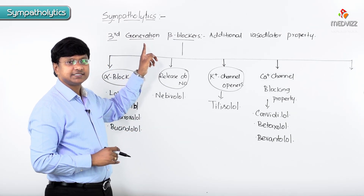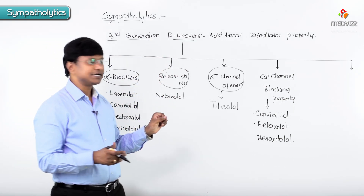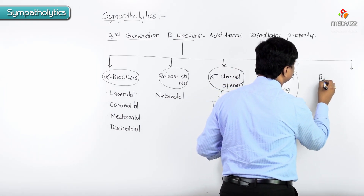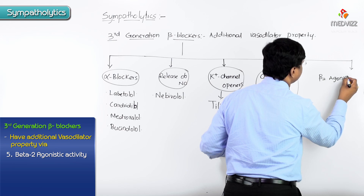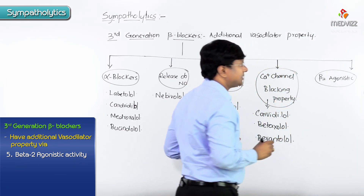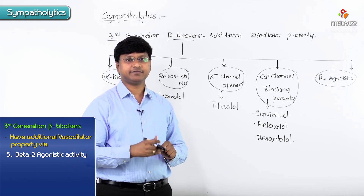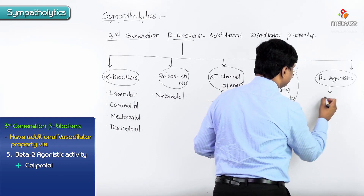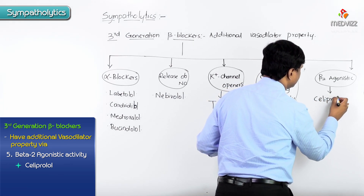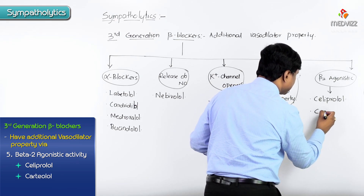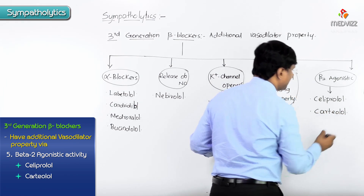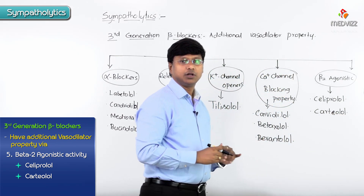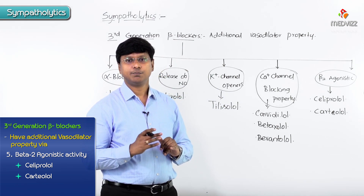Another group is third generation beta blockers with beta-2 agonistic activity. Beta-2 receptors, once stimulated, cause vasodilatation. The examples in this group are celiprolol, carteolol, and bopindolol.